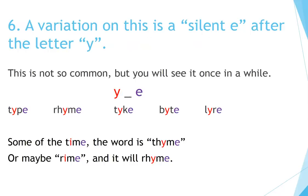Number six. A variation on this is a silent E after the letter Y: Y, silent E. This is not so common, but you will see it once in a while. Type, rhyme, tyke, bite, liar. Some of the time, the word is time. Or maybe rhyme — and it will rhyme.